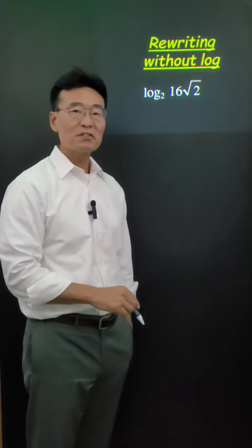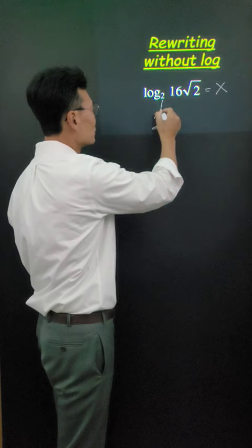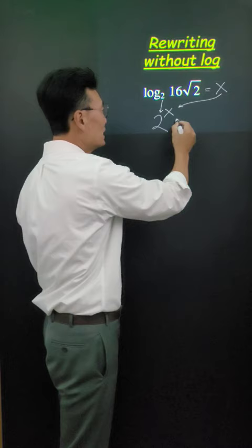To simplify this expression, what you want to do is set it equal to x and then change it into an exponential equation. So it becomes 2, that's where the 2 comes from, to the x power. Whatever is on the right side is always going to be the exponent. And then set that equal to the 16 root 2.